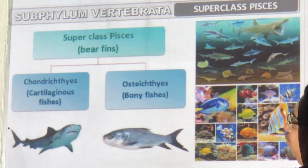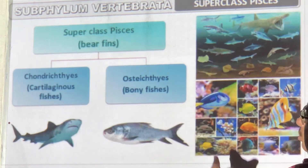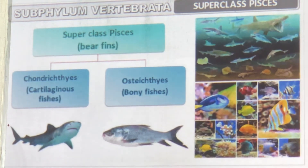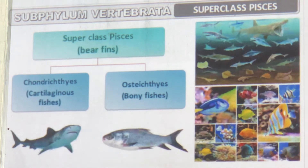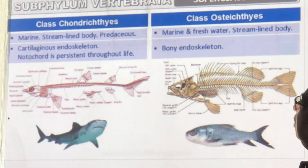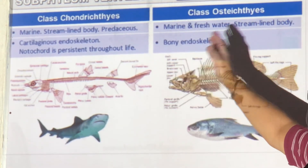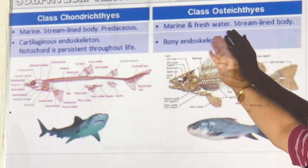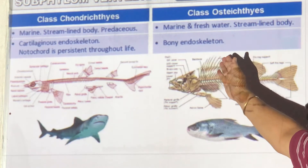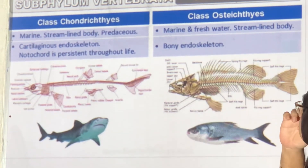Pisces are fishes that bear fins. They may be made of cartilage — Chondrichthyes — or they may be bony — Osteichthyes. Chondrichthyes are marine only; Osteichthyes are marine and fresh water. Both are streamlined. Chondrichthyes have a cartilaginous endoskeleton; Osteichthyes have a bony endoskeleton. The notochord is present in both.